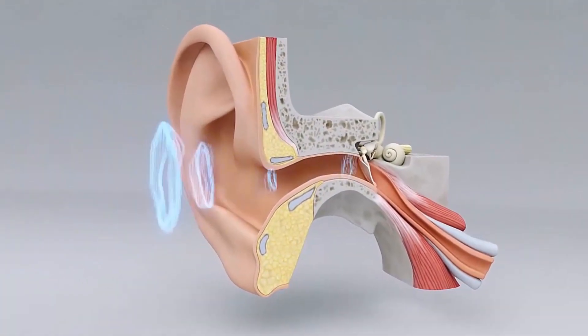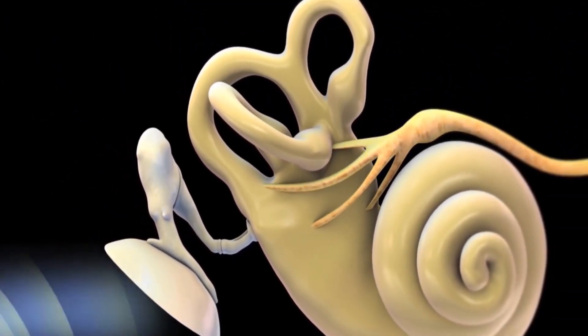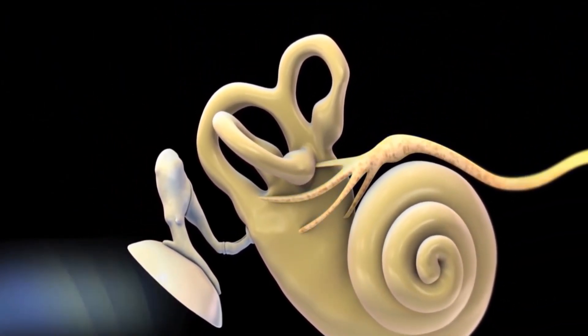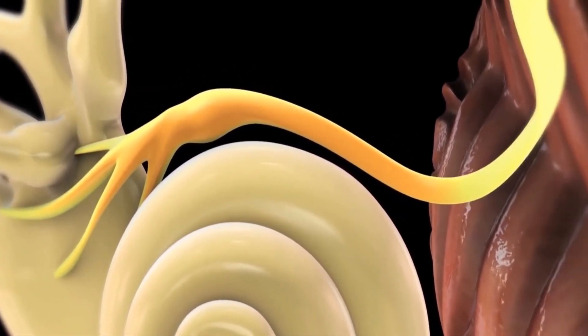Just how did evolution dream all of this up? These five separate systems, each of which is purposeless and meaningless without the others, all connecting to make an overall hearing system that truly shows intentional design.